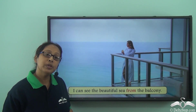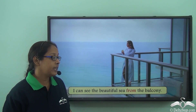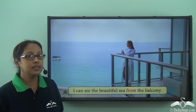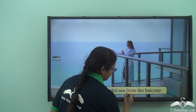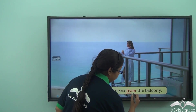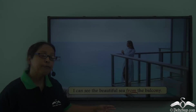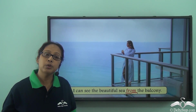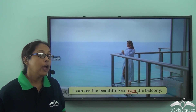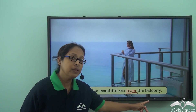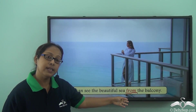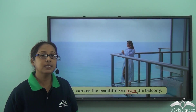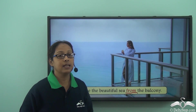I can see the beautiful sea from the balcony. The preposition in the sentence is 'from'. From tells us the point where I can see the beautiful sea — from where? From the balcony. So it is telling us the point from where something is happening, from where I can see something.